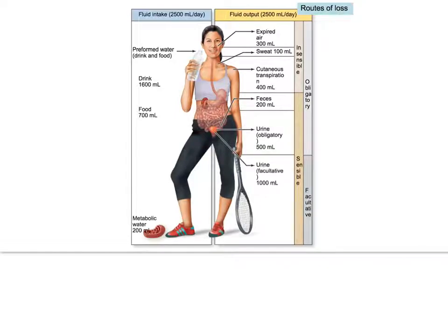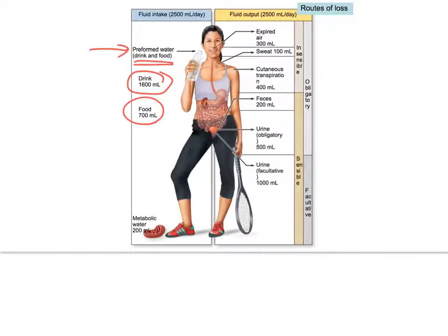Here's a picture showing the types of water loss and how we gain water. We gain water two ways: preformed water, which is what we get from drink and food — typically 1,600 milliliters of drink and about 700 milliliters from food per day — and metabolic water, which is a byproduct of all the biochemical pathways in our body.